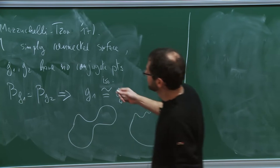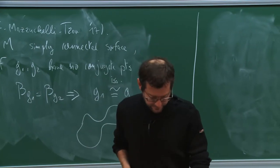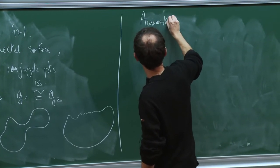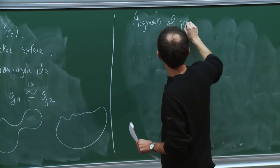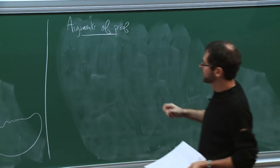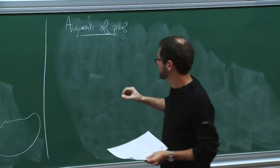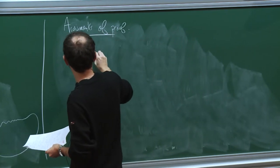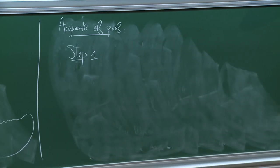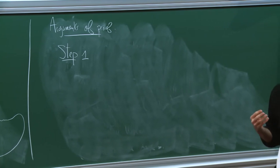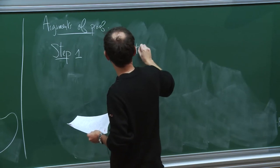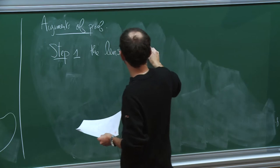Let me explain some ideas of the proof. While developing the idea I will also mention another theorem. The first step is a geometric step. In step one, we go from the boundary distance to another piece of data called the lens data. Let me define the lens data. First I should introduce an important object: the unit tangent boundary — the set of pairs (point, tangent vector) with speed one.